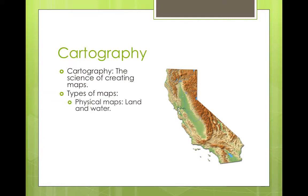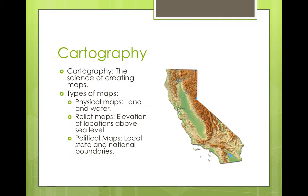There are physical maps that measure land and water, relief maps which show elevation of locations above sea level, and political maps which have local, state, and national boundaries.